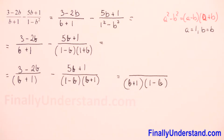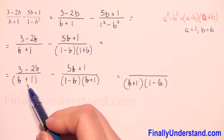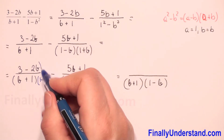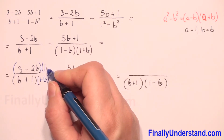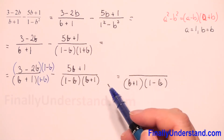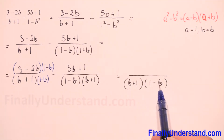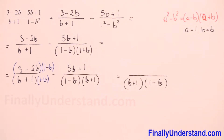If we multiply the first denominator by 1 minus b, we have to do the same to the numerator, so we multiply the numerator by 1 minus b as well. The second denominator already has 1 minus b and b plus 1, so it has the same LCD and we don't need to change the second algebraic fraction.